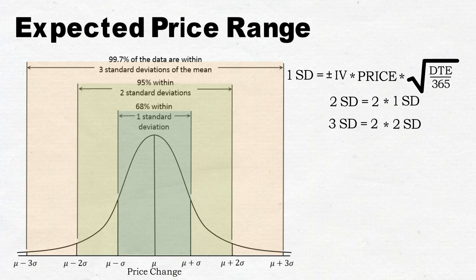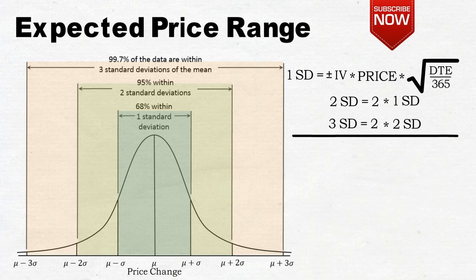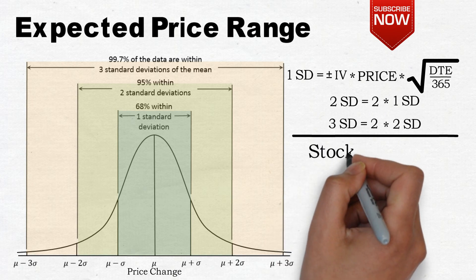Implied volatility is normally quoted on an annualized basis. That's why we divide the time till expiration by 365 to get the expected range until the expiration date. Let's look at an example to clarify all this.